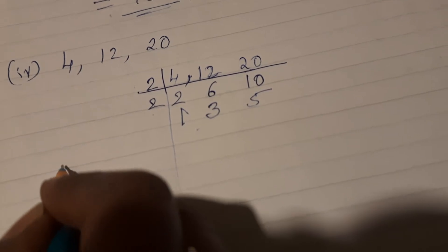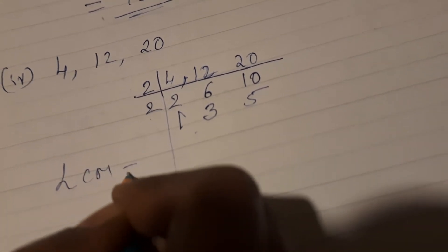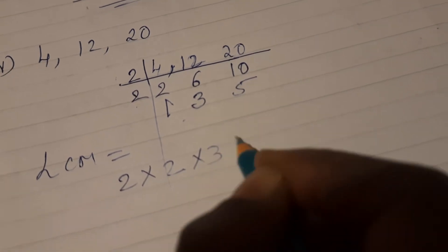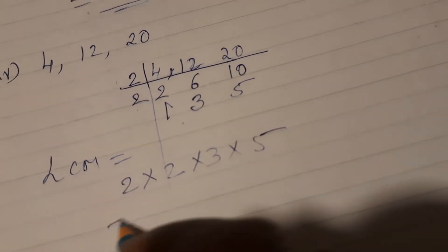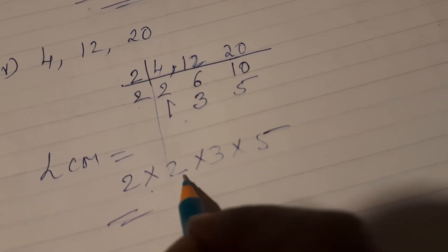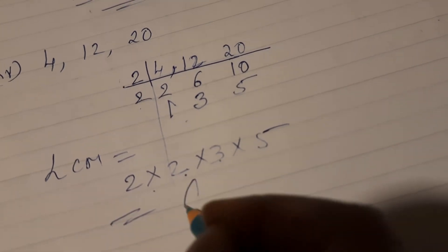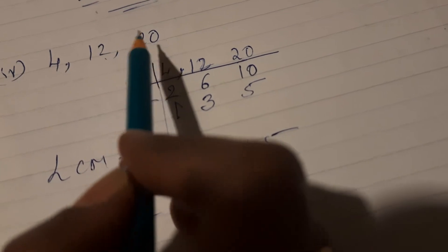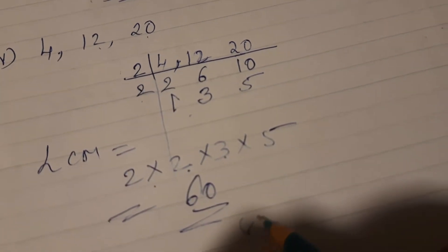So LCM is equal to 2 into 2 into 3 into 5. That will be 2 twos are 4, 4 threes are 12, 12 fives are 60.